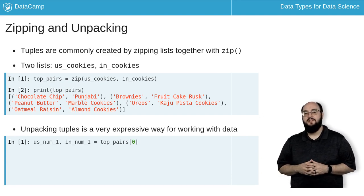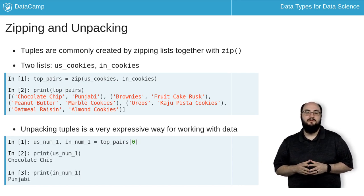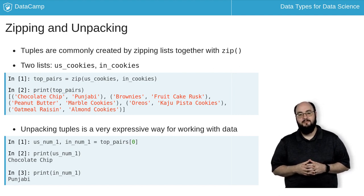Here I have a tuple containing the top-ranked cookie from both countries, and I want to store them as USNUM1 and INNUM1 so that I can print them by name. I start by putting both variables as the target of an assignment statement, separated by a comma. Then I assign the first tuple in our top pairs list to them.